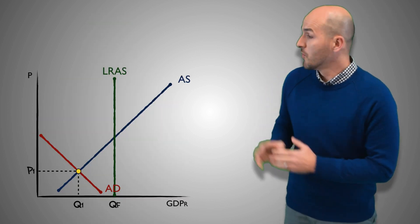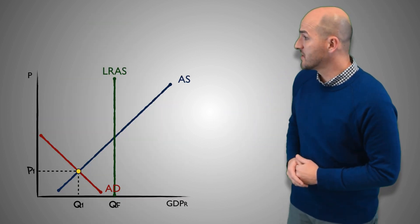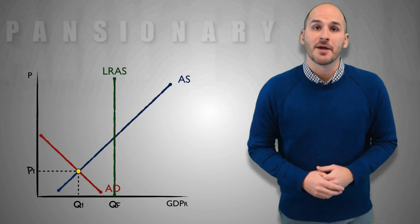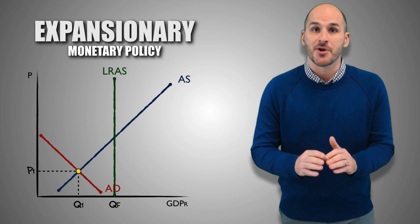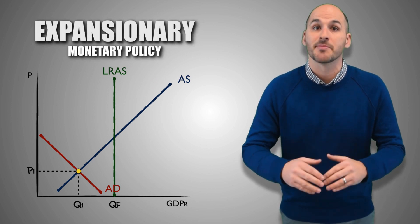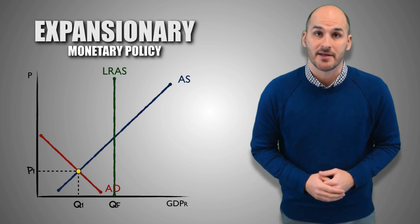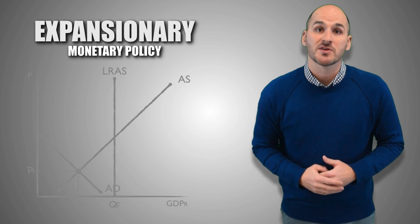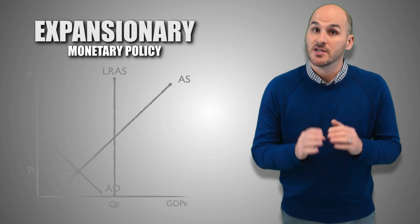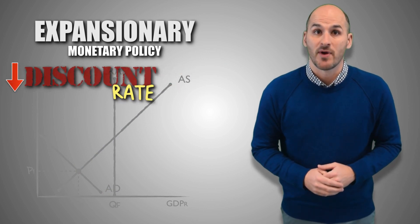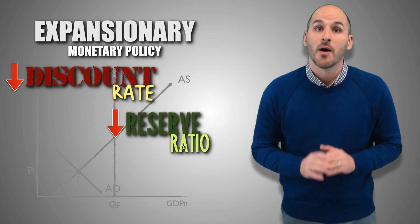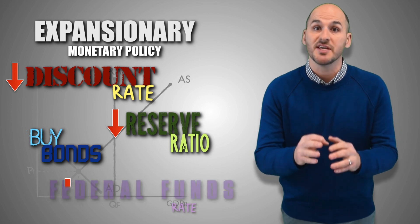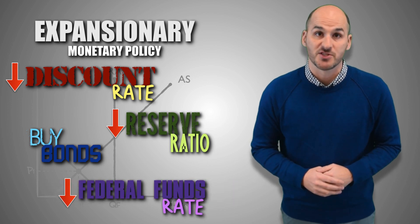As a result, when the economy is in a recessionary gap, the Federal Reserve will implement expansionary or easy monetary policy to stimulate aggregate demand. The Fed has four policy options: decrease the discount rate, decrease the reserve ratio, buy bonds in the open market, or decrease the federal funds rate.